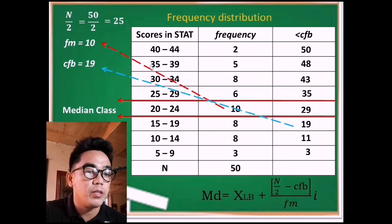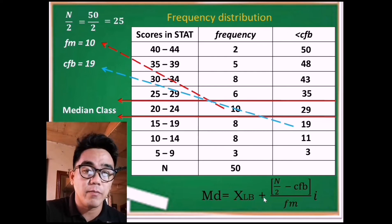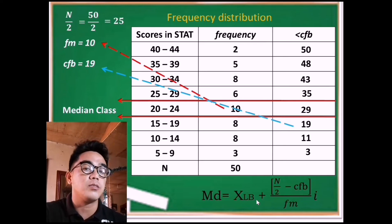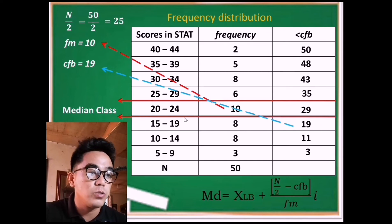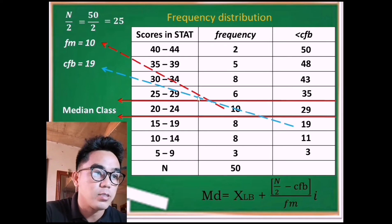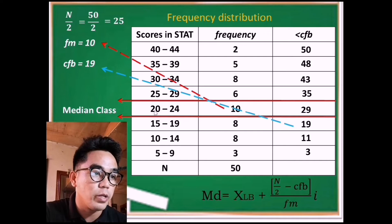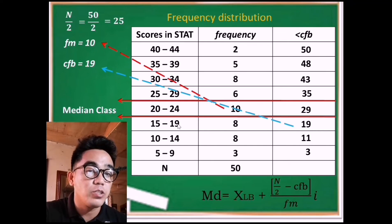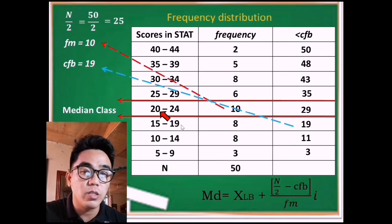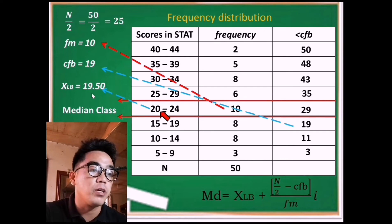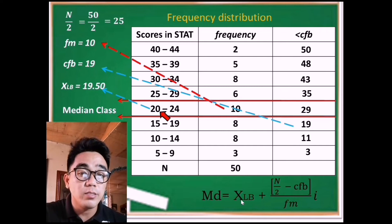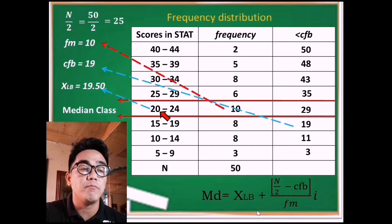Now we need to find XLB, the lower boundary or true lower limit of the median class. Since it is the lower boundary, it is the lower limit, which is 20, not 24. To get XLB, we average 20 and the value just before it, which is 19. So 19 plus 20 is 39, divided by 2, gives us 19.5. Therefore, XLB equals 19.5.